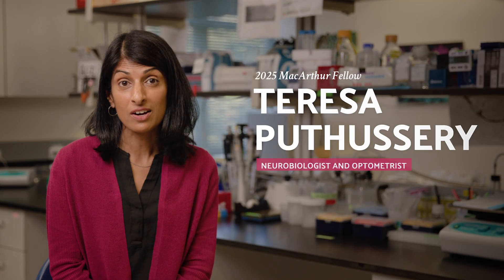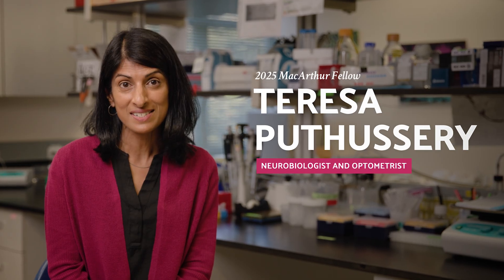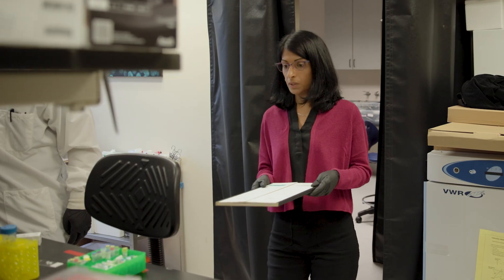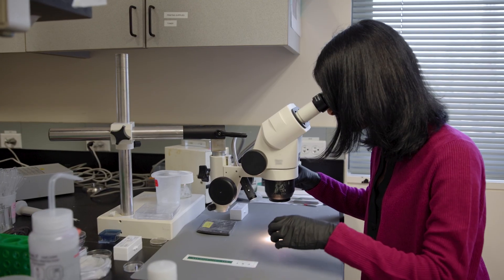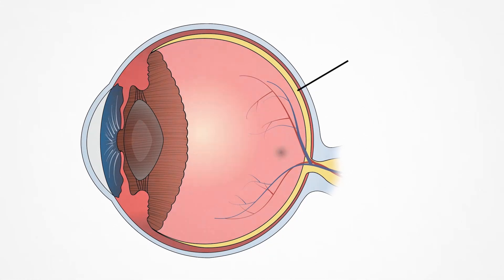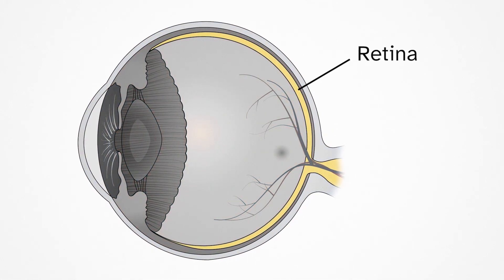My name is Teresa Pottisseri and I am a neurobiologist and optometrist. My lab studies how we see. We focus specifically on the retina, which is the neural tissue that lines the back of the eye.